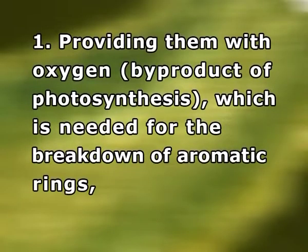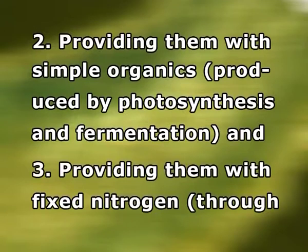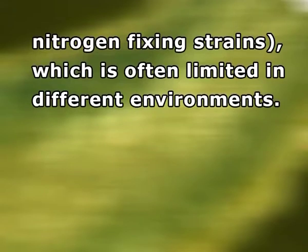Cyanobacteria's indirect role includes: 1) providing oxygen, a by-product of photosynthesis needed for the breakdown of aromatic rings; 2) providing simple organics produced by photosynthesis and fermentation; 3) providing fixed nitrogen through nitrogen-fixing strains, which is often limited in different environments. Abed and Köster (2005) demonstrated the capability of an Oscillatoria–Gamma-Proteobacteria consortium to degrade phenanthrene, dibenzothiophene, pristane and n-octadecane.